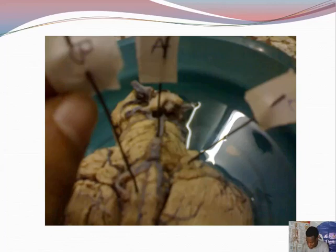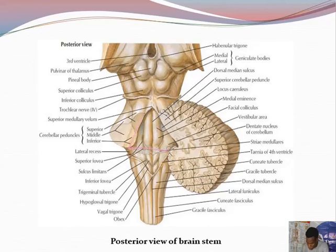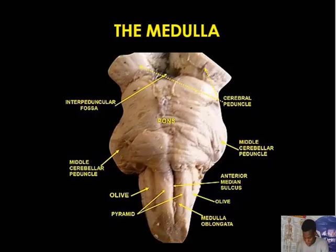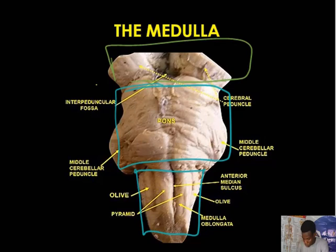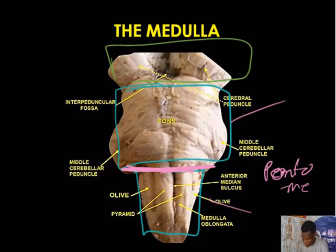Let's move to the posterior aspect of the pons. The posterior part of the pons together with the posterior part of the medulla collectively form a structure called the floor of the fourth ventricle, otherwise called the rhomboid fossa. Now moving to the medulla: the medulla is the distal part of the brainstem. The junction between the pons and the medulla is called the pontomedullary junction, where some important nerves emerge.